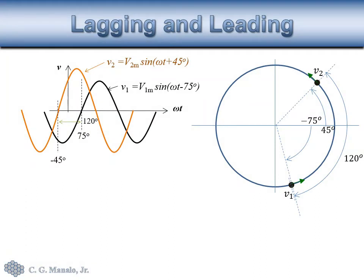Let's have another scenario. We move V2 and change its phase angle by 45 degrees and plot it on our circular racetrack. Here is V1, here is V2. The smaller angle between them is clearly 120 degrees, so we can conclude that V2 is leading V1, or V1 is lagging V2, by 120 degrees.